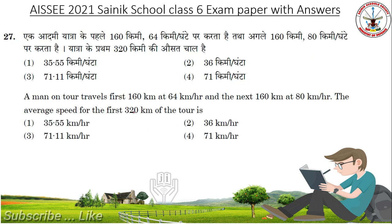A man on tour travels first 160 kilometers at 60 kilometers per hour and the next 160 kilometers at 80 kilometers per hour. The average speed for the first 320 kilometers of the tour is. Answer is 71.11 kilometers per hour.